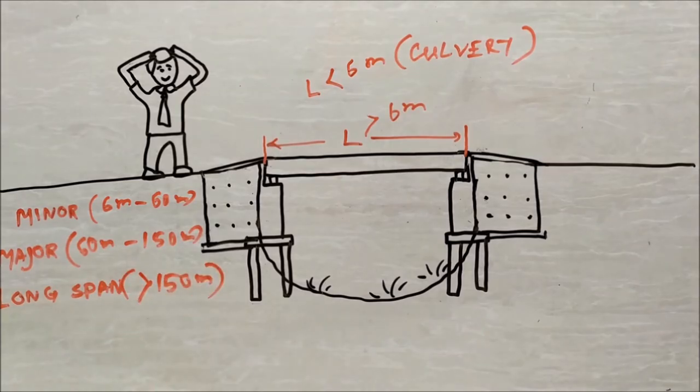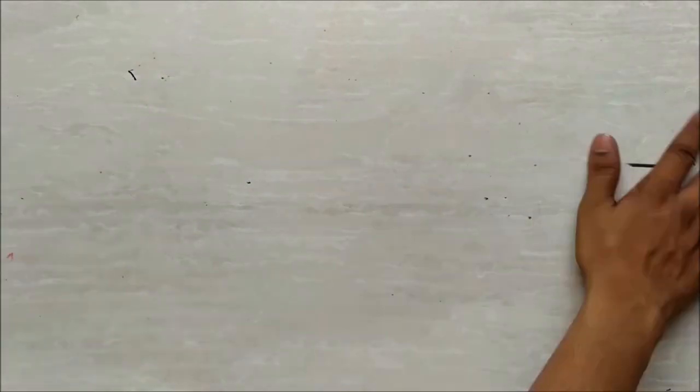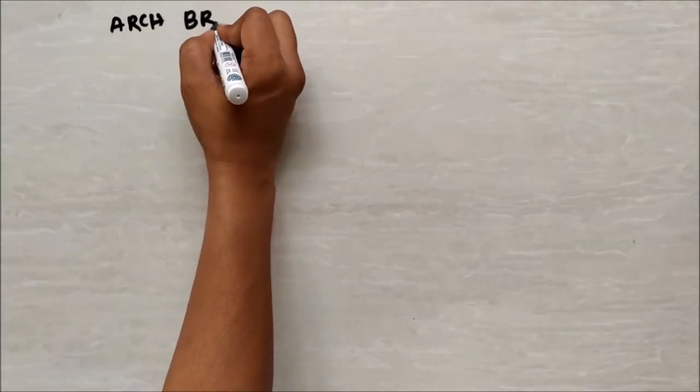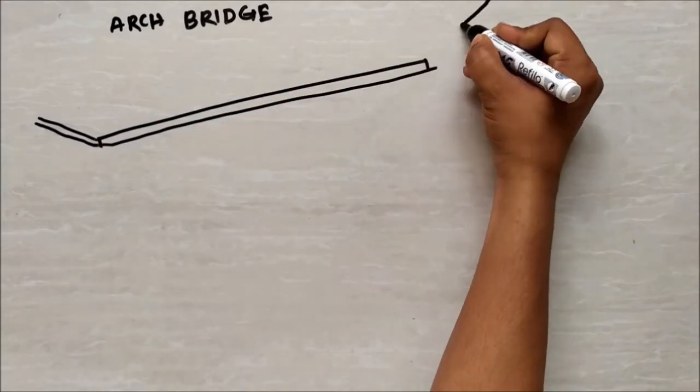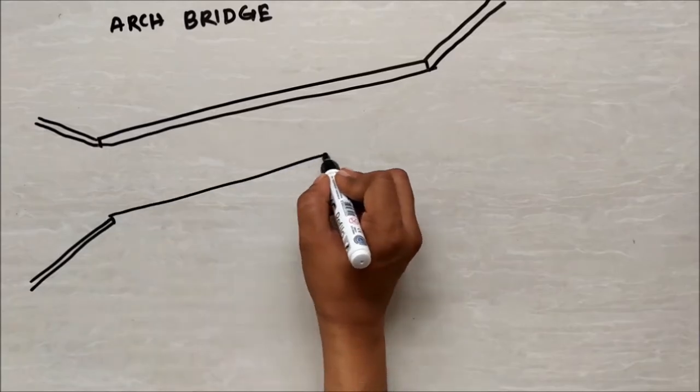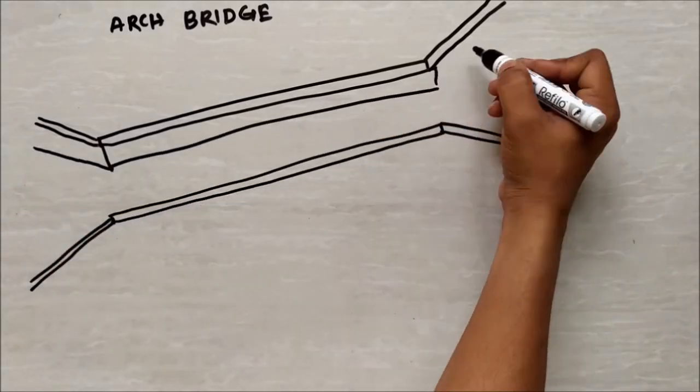Based on the form and type of superstructure, bridges are mainly classified as arch bridges, girder bridges, truss bridges, and suspension bridges. Today we will discuss some basic components of arch bridges.